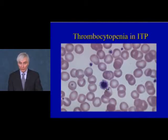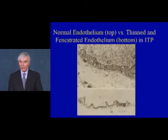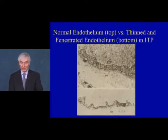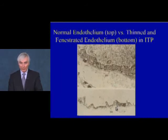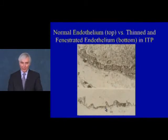In a rabbit model of ITP, antibody was introduced to reduce platelet counts to less than 5,000 (normal rabbit platelet count about 450,000). In normal endothelium the endothelial wall is about a micron in thickness. In the presence of severe thrombocytopenia, the endothelium is thinned to less than half its original thickness, with frank breaks or fenestrations in some areas. Hemorrhage in severe thrombocytopenia therefore results from loss of vascular integrity and not just because of the low platelet count.